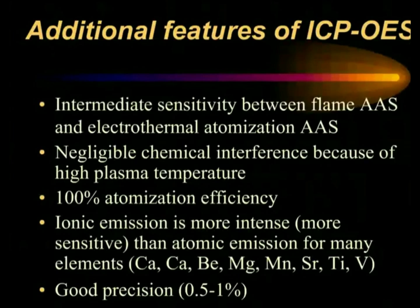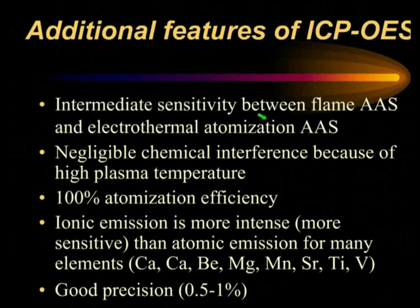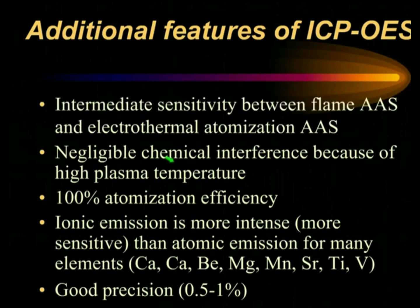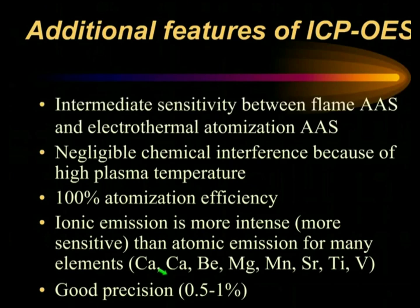The ICP as an emission source has a number of additional features. In terms of sensitivity, it is intermediate between what you get with a flame in atomic absorption spectroscopy and with a graphite furnace or electrothermal atomization in atomic absorption spectroscopy. It is very free of matrix effects, also called chemical interferences, because of the high plasma temperature — basically everything is completely atomized in the plasma. This is an advantage, but also a disadvantage if you want to do speciation analysis, because you have to separate the different species of a given element. Ionic emission is usually more intense and more sensitive than atomic emission for many elements, and measurements can be done with good precision, similar to flame atomic absorption.